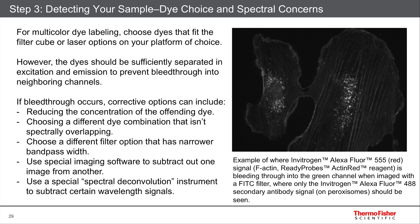Now, realize that you can sometimes have a problem with bleed-through. This is where, for example, you have a green fluorescent dye like Alexa Fluor 488 and an orange-red fluorescent dye like Alexa Fluor 555 or Cy3, and one dye bleeds through into the filter of the other dye such that you see a signal.